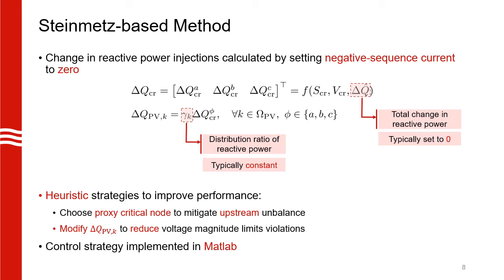Another thing to note is that there is no way to enforce voltage limits in this strategy. So we are going to utilize local voltage measurements and modify the reactive power injections, delta Q_PV, such that the voltage magnitudes at the corresponding nodes are well within the limits.